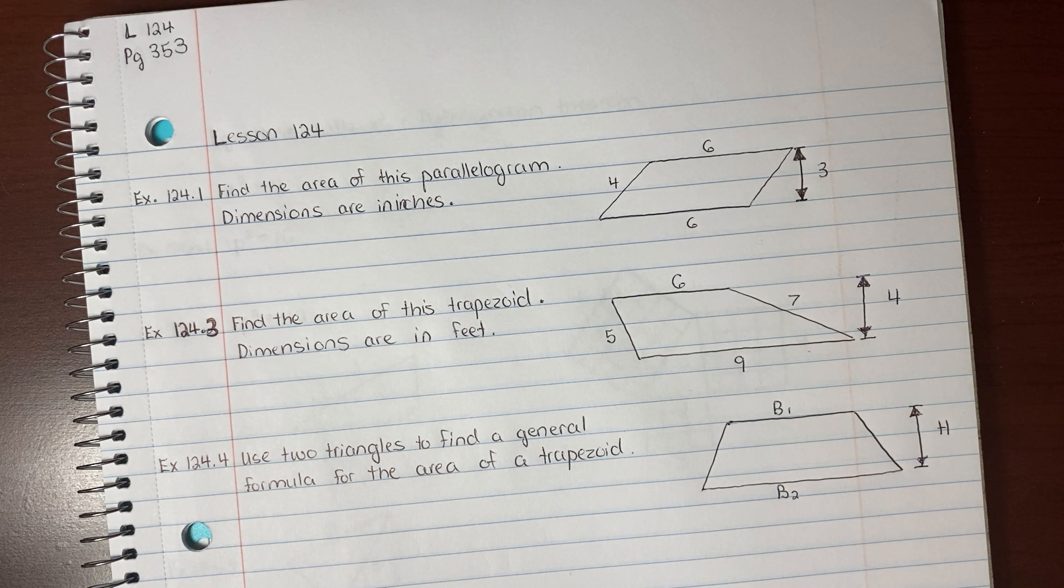So far we've found the area for rectangles and squares, base times height. Triangles, base times height divided by 2. Circles, pi r squared. So we're going to use some of that knowledge to figure out the area of some parallelograms.